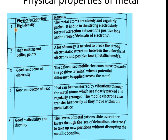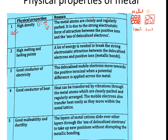All metals have high density. Density equals mass divided by volume. Metal atoms are very closely and regularly packed — if you compare the same unit volume of a metal to another material, the metal will contain more particles and therefore more mass, giving it a higher density. This is because all atoms are held together by strong electrostatic forces of attraction between positive ions and the sea of delocalized electrons, keeping them tightly packed.